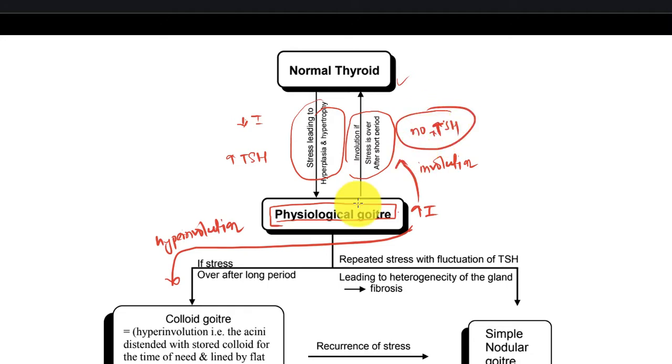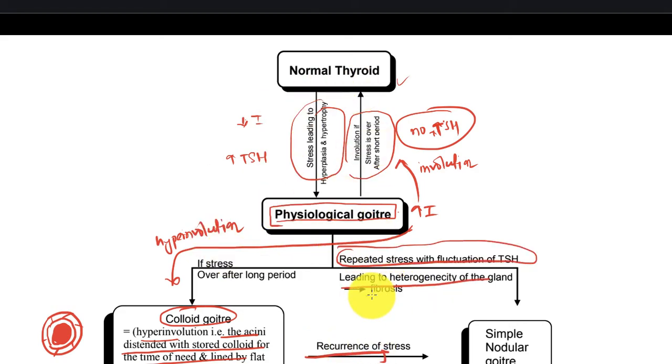With increased iodine, it will go into normal involution. If the iodine is excessive, it causes hyper involution and colloid goiter forms. If there is recurrence of stress and repeated stress, it results in formation of simple nodular goiter.